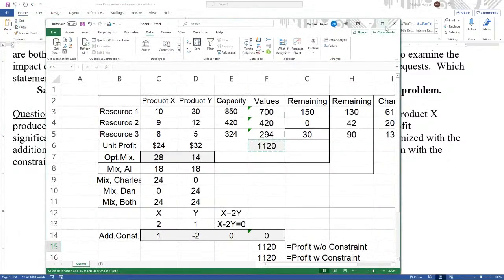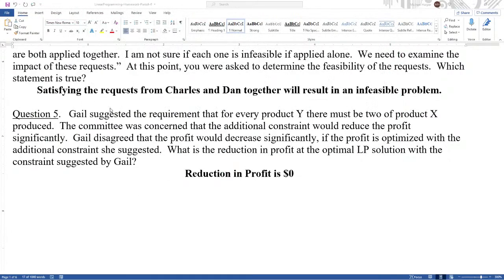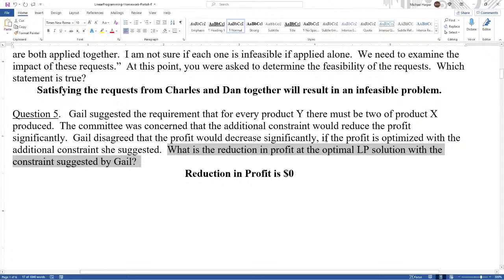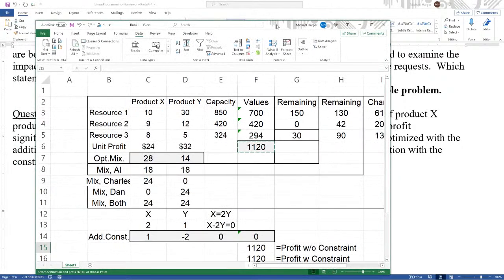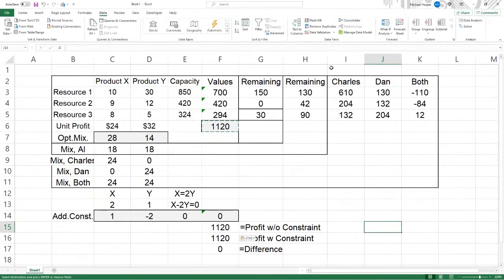And so the difference or the reduction in profit is zero. There's no difference. And so that's Gail. Well, Gail is right. She disagrees that the profit would decrease significantly because the decrease is zero. That's a pretty insignificant decrease. So good job, Gail. You did a good job.